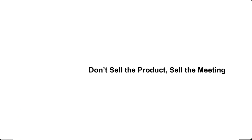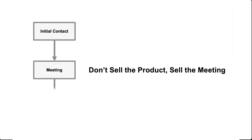Don't sell the product, sell the meeting. In the sales process, the first step is initial contact, then the meeting, then the presentation. If you send an email designed around 'this is the product I sell, do you need it?' you're skipping both the meeting and presentation steps and just selling the product. You can greatly improve your email prospecting effectiveness if you focus on selling the meeting instead of selling the product.